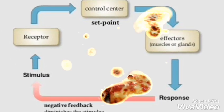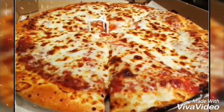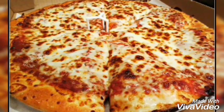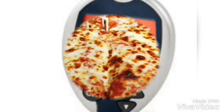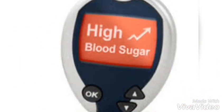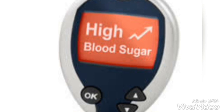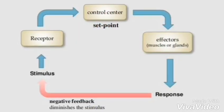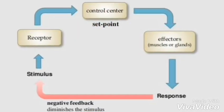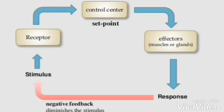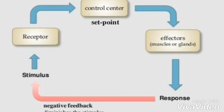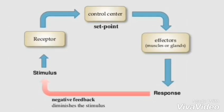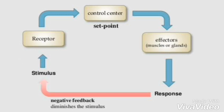Let's take for example you eating a double cheese pizza. This causes the blood glucose levels to rise. Adjustments are then made by the components of the blood glucose homeostatic control system to lower this blood glucose level by moving the nutrient into tissues that require it or by storing it for later use.